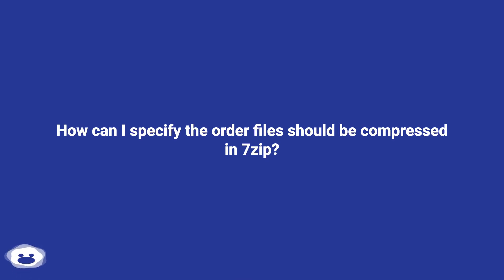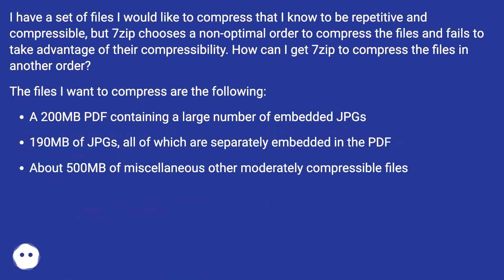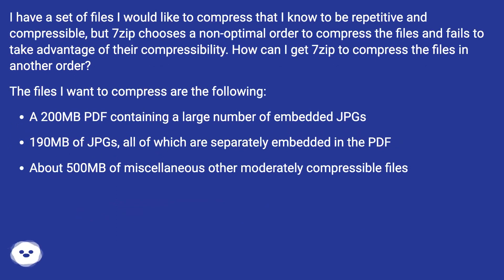How can I specify the order files should be compressed in 7-zip? I have a set of files I would like to compress that I know to be repetitive and compressible, but 7-zip chooses a non-optimal order to compress the files and fails to take advantage of their compressibility. How can I get 7-zip to compress the files in another order?